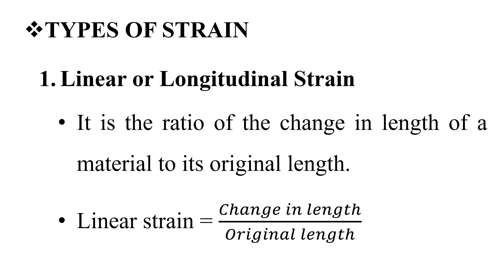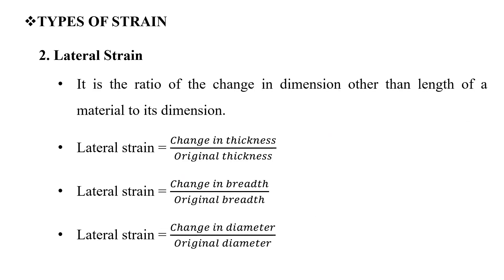Types of strain — linear or longitudinal strain: it is the ratio of the change in length of a material to its original length. Lateral strain is equal to change in thickness divided by original thickness.